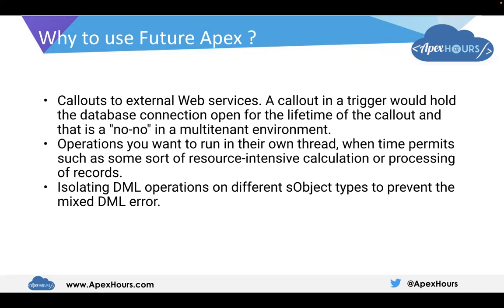Now let's see why we should use a future method. A future method is a normal Apex method with an annotation of @future. The first use case is callouts to external web services — a callout in a trigger would hold the database connection open for the lifetime of the DML operation. So whenever you are performing a DML operation in a trigger, if you want to call an external web service, you cannot do that directly in the trigger. What you need to do is create the callout inside a future method and then call that future method from the trigger. Triggers always work synchronously, so callouts must be moved to an asynchronous future method.